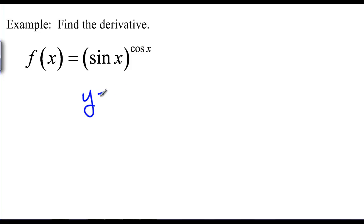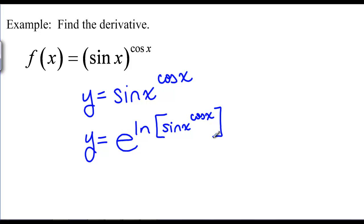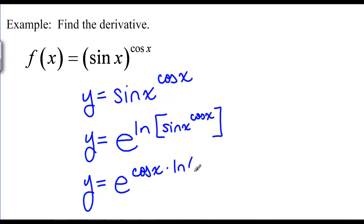For sine of x raised to the cosine of x, there's another way to approach this beyond taking the natural log of both sides. Instead of implicit differentiation, we can write y equals e raised to the ln of sine of x to the cosine of x. The advantage is it avoids implicit differentiation and can be used in the middle of a more complicated problem. Now we have a log of something raised to something, so we use the log rule to bring down the exponent: cosine of x times natural log of sine of x.